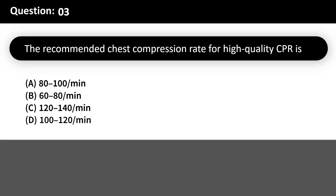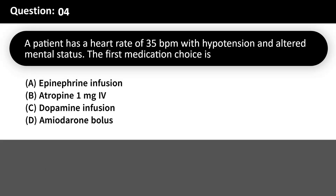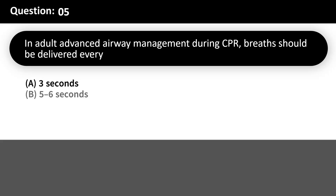The recommended chest compression rate for high-quality CPR. Answer: D. 100-120 compressions per minute optimizes circulation and survival rates. A patient has a heart rate of 35 BPM with hypotension and altered mental status. The first medication choice is: A. Epinephrine infusion. B. Atropine 1mg IV. C. Dopamine infusion. D. Amiodarone bolus. Answer: B.